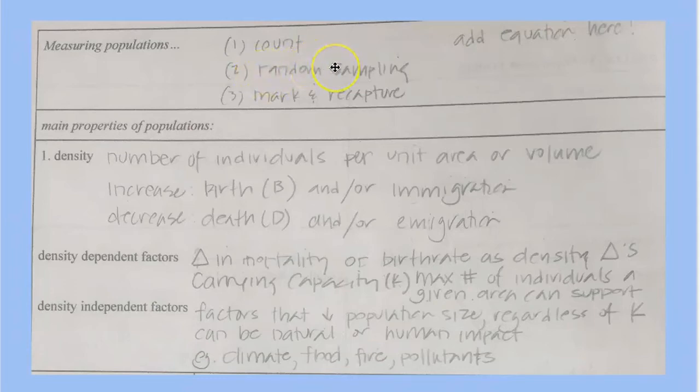You can use random sampling to estimate numbers. You can also use a mark and recapture method. We're going to talk a little bit about this. Just leave that blank for a second.